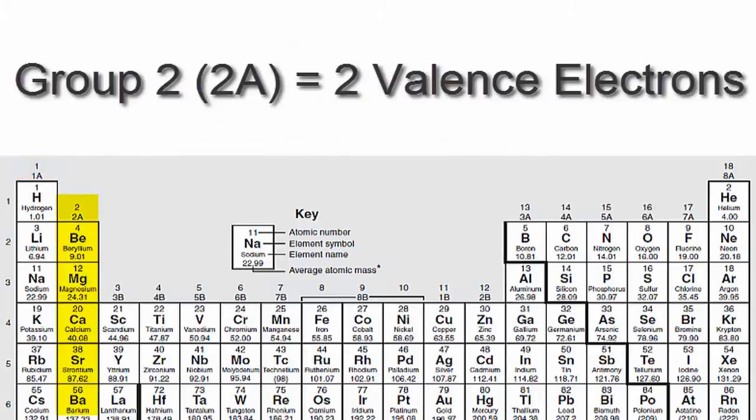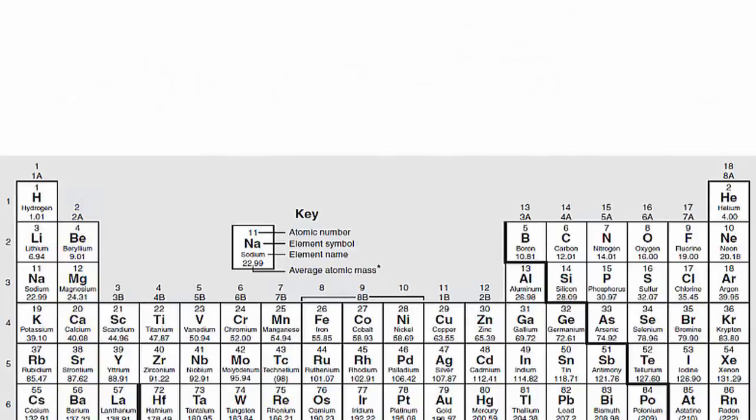If you look at group 2 or 2A, you'll see that those elements have two valence electrons. We'll skip over the transition metals since they're a bit more complicated and probably don't apply to you.